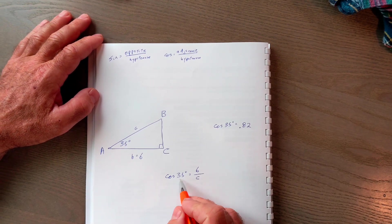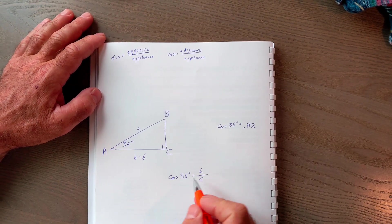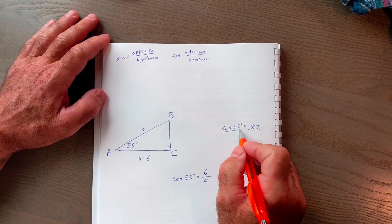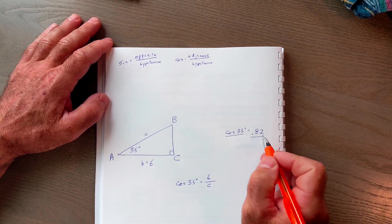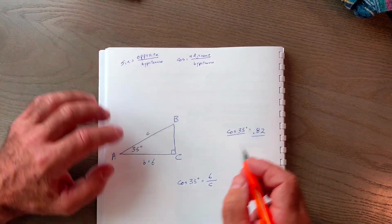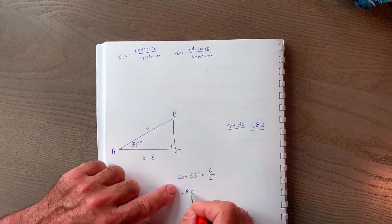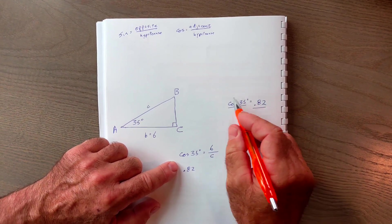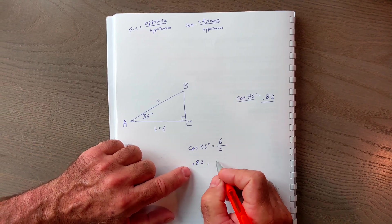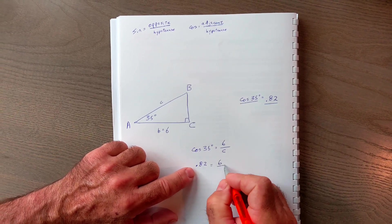So once I have my equation set, cosine of 35 degrees equals my adjacent over hypotenuse. On my calculator, I have cosine of 35 is equal to 0.817, and I round it to two decimal places. So cosine of 35 and 0.82 are equivalents. So I'm able to replace this with this. So I replace that with that. That gives me 0.82 is equal to 6 over C.